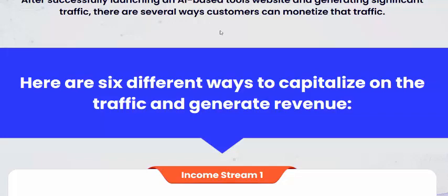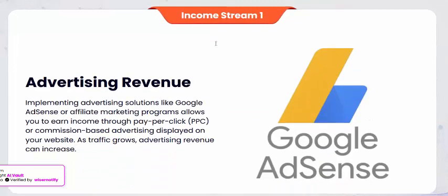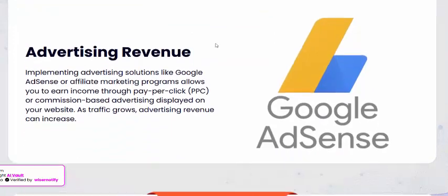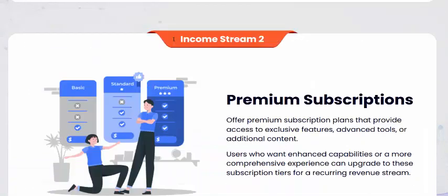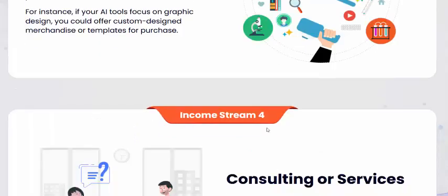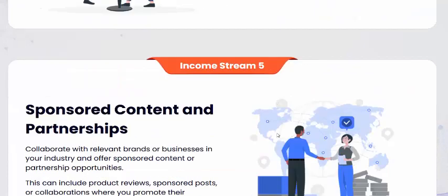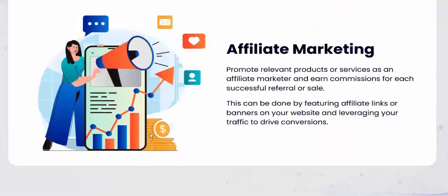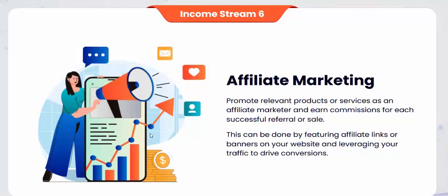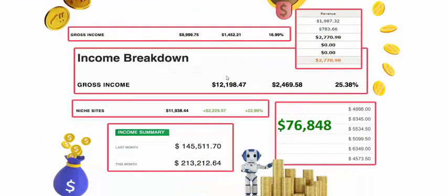There are six different ways to monetize and generate revenue. Income system one: investing. Income system two: premium subscription. Income system three: product sales. Income system four: consulting services. Income system five: sponsored content and partnerships. Income system six: affiliate marketing.